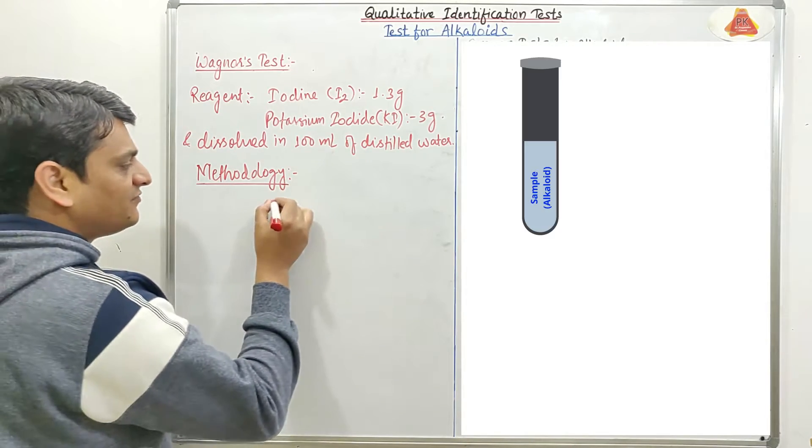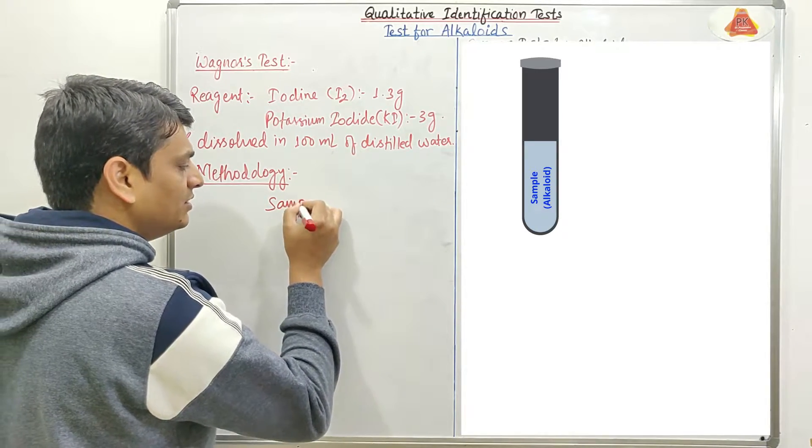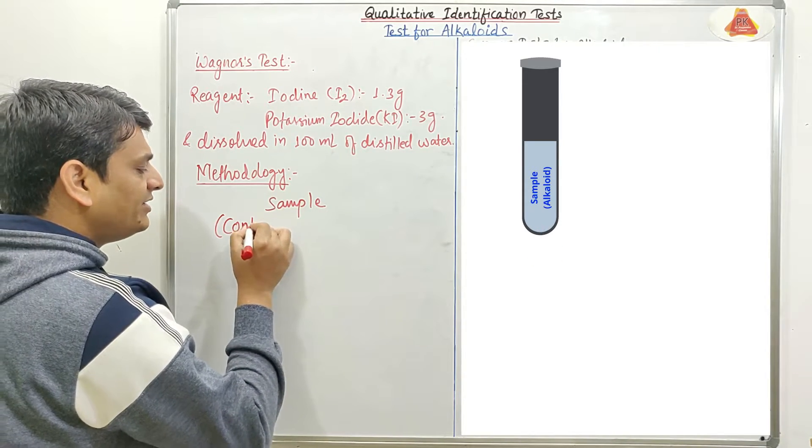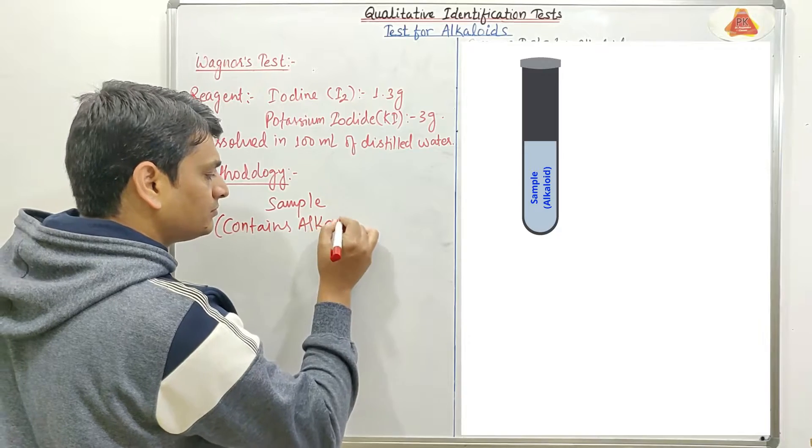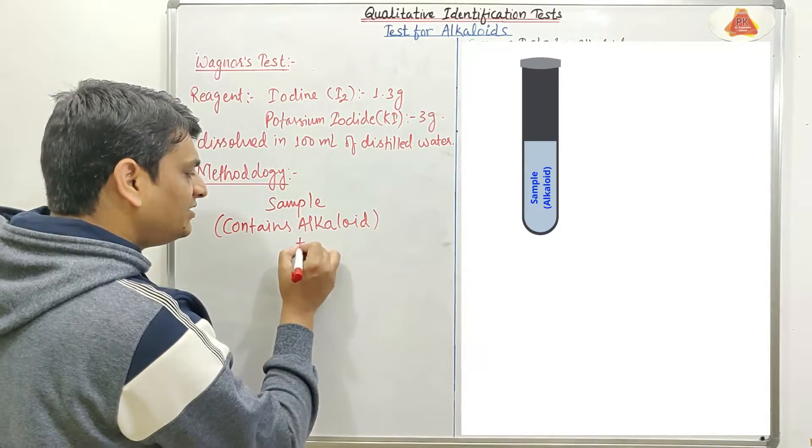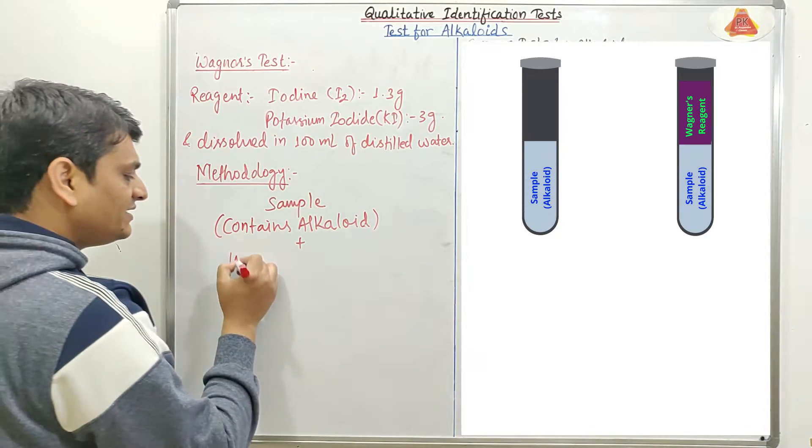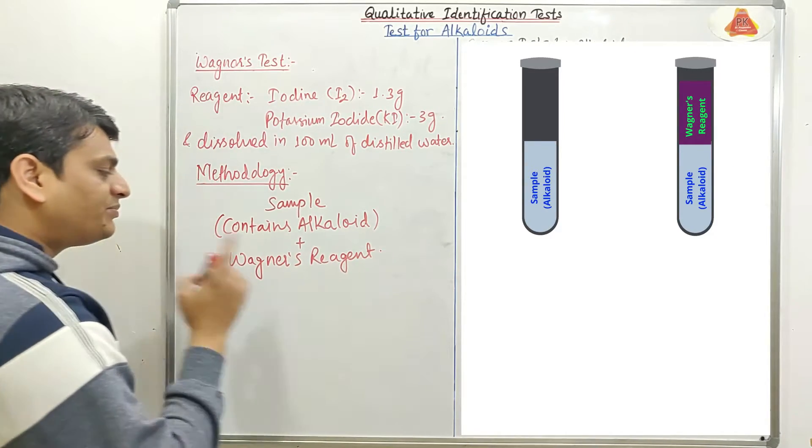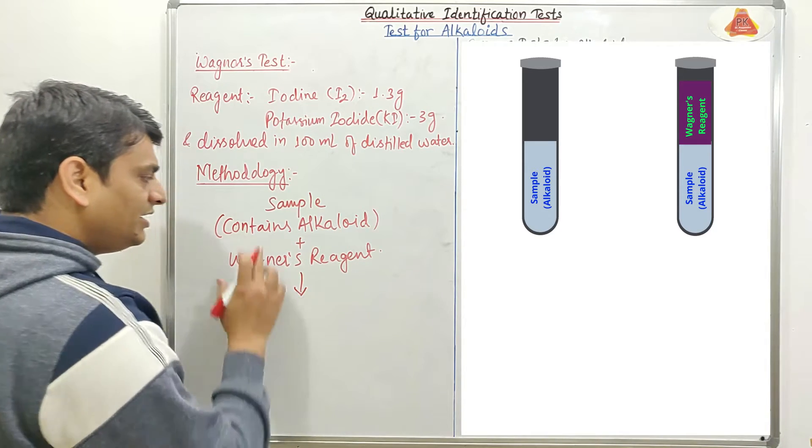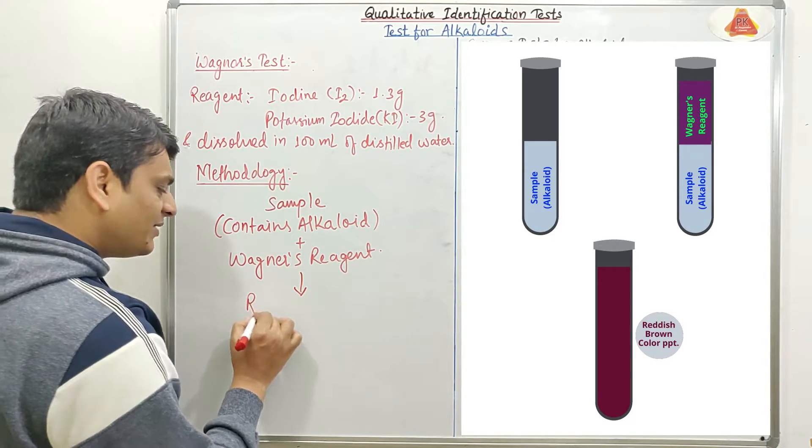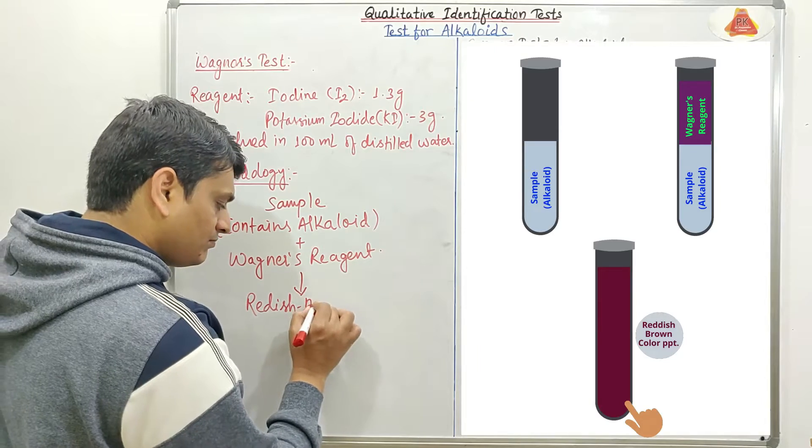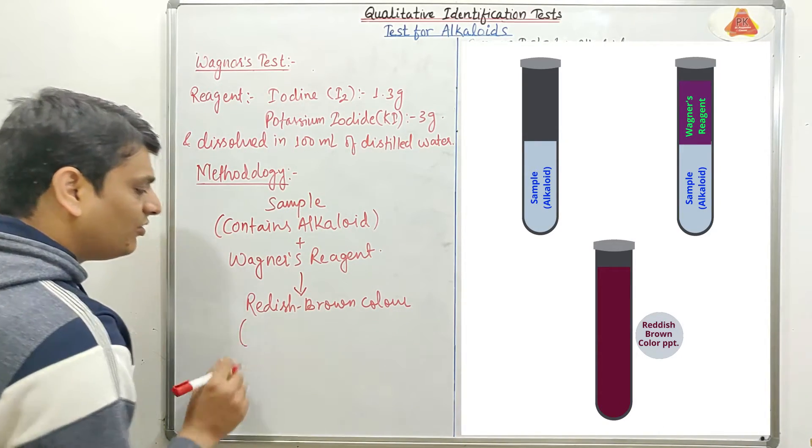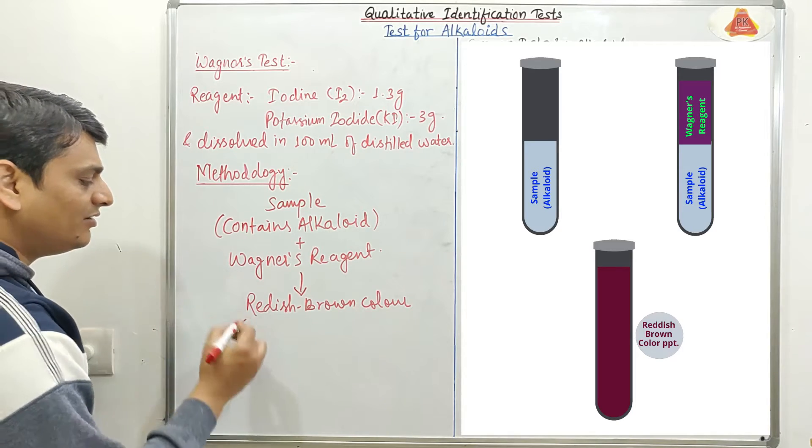For this Wagner's test, first we will take the sample and this sample should contain alkaloid. After that we will add this Wagner's reagent. And after the addition of this Wagner's reagent, if this sample will give reddish brown color, it means alkaloid or alkaloids are present in our sample.